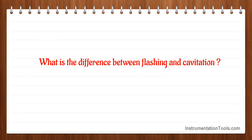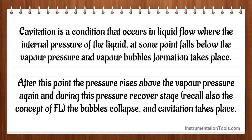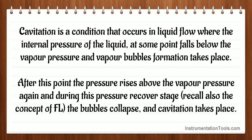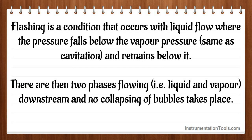What is the difference between flashing and cavitation? Cavitation is a condition that occurs in liquid flow where the internal pressure of the liquid at some point falls below the vapor pressure and vapor bubble formation takes place. After this point, the pressure rises above the vapor pressure again, and during this pressure recovery stage the bubbles collapse and cavitation takes place. Flashing is a condition that occurs with liquid flow where the pressure falls below the vapor pressure — same as cavitation — but remains below it. There are then two phases flowing, liquid and vapor, downstream and no collapsing of bubbles takes place.